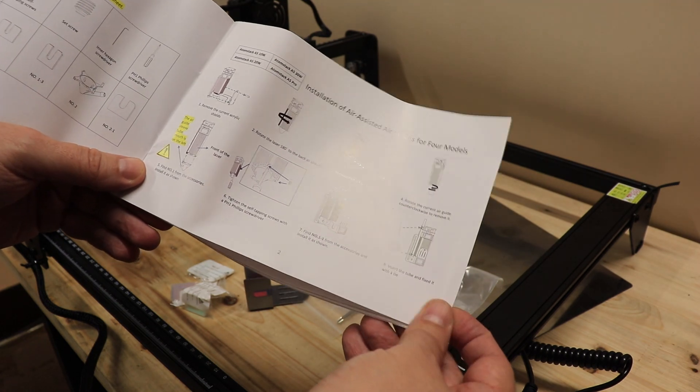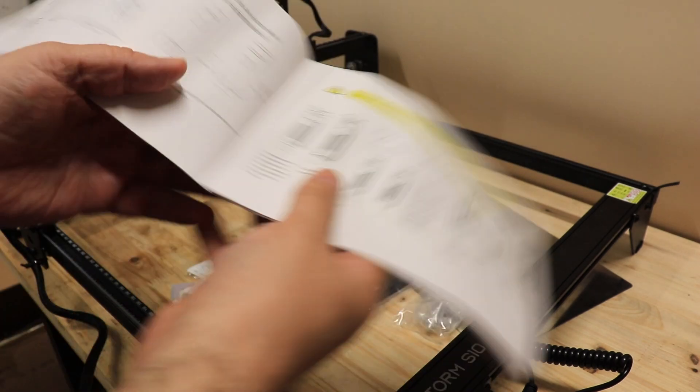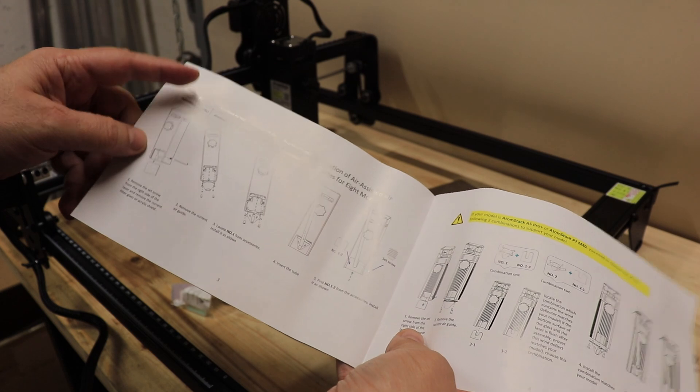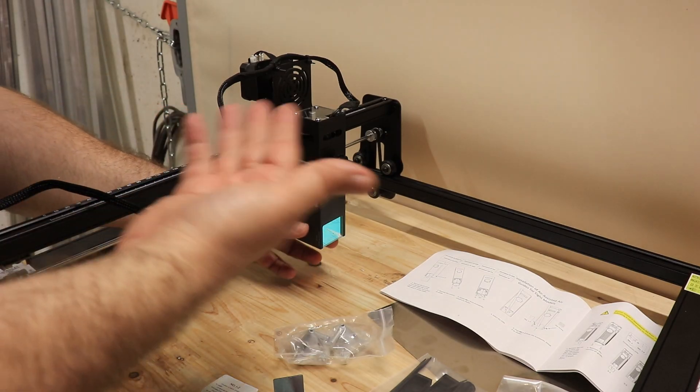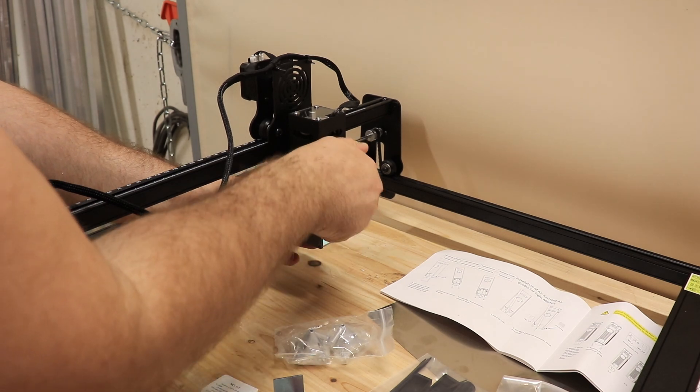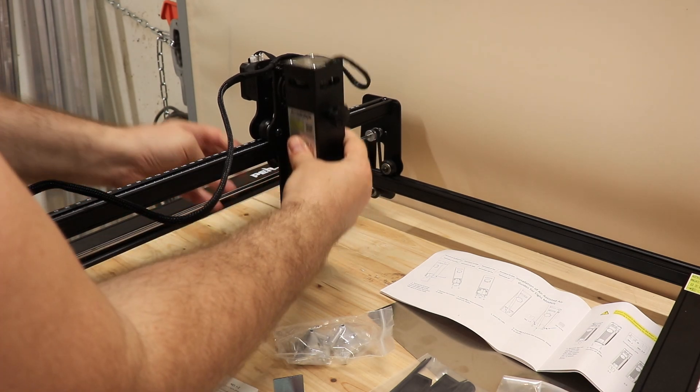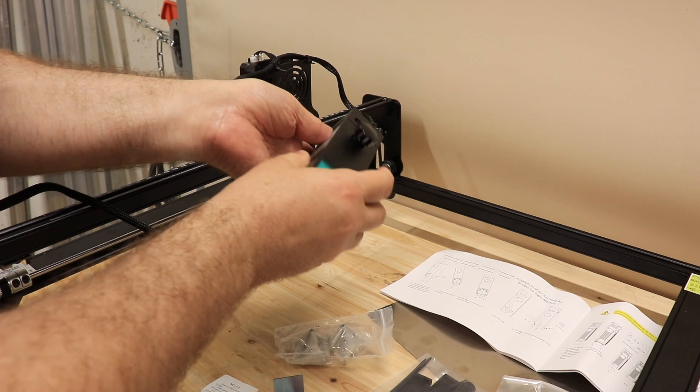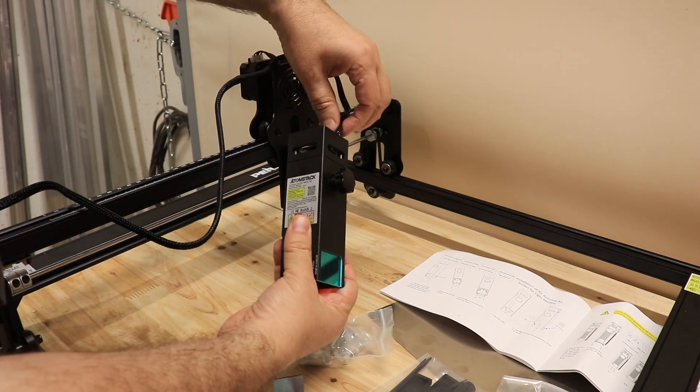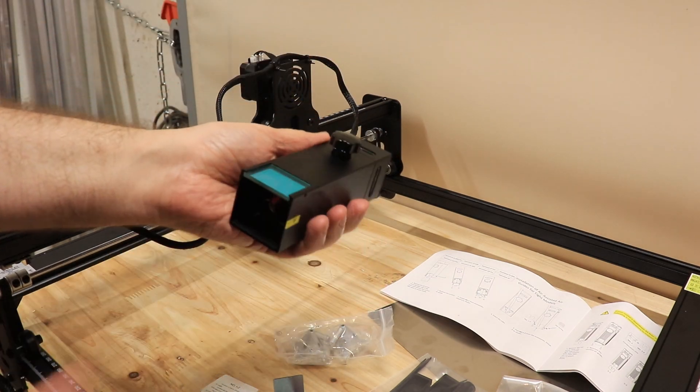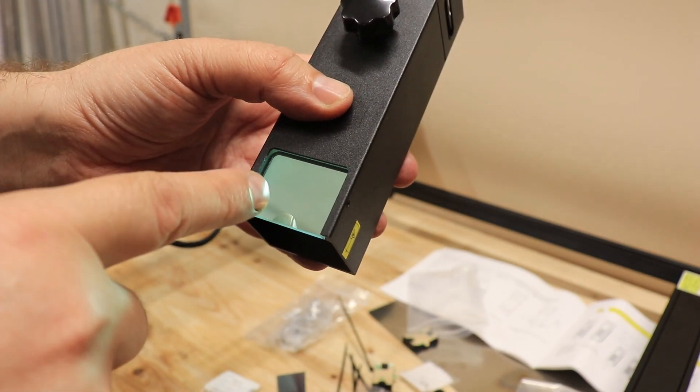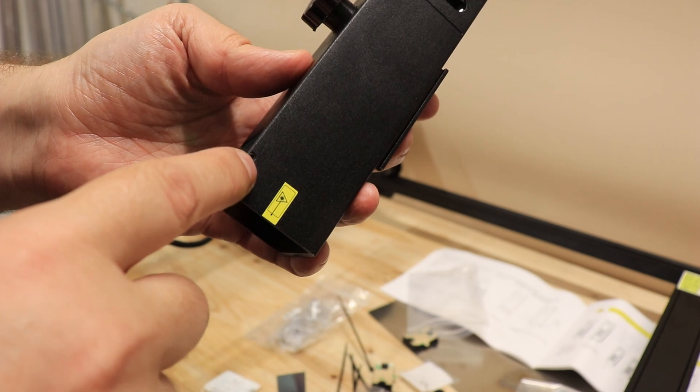There are instructions for the older version of Atomstack and this is for the newer one, mine is S10. First I will start with removing the module because it will be easier to show into the camera. Maybe I can remove the cable too.